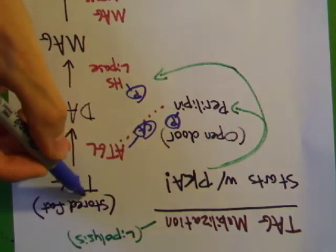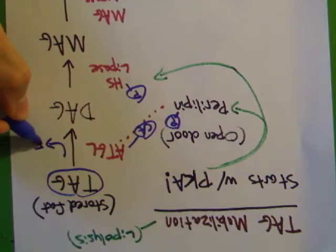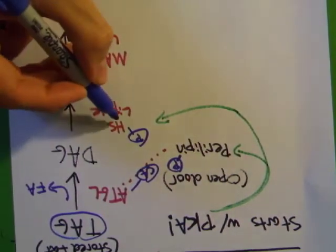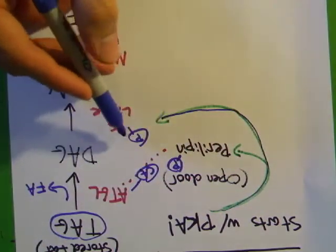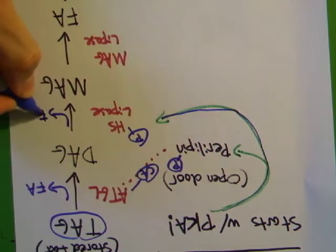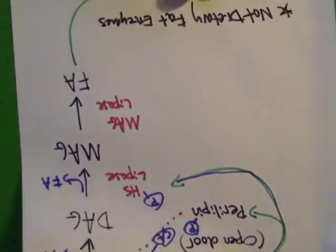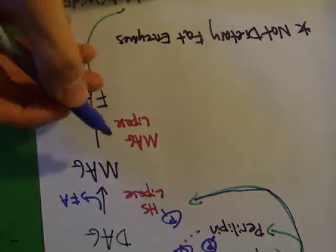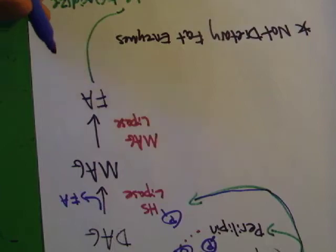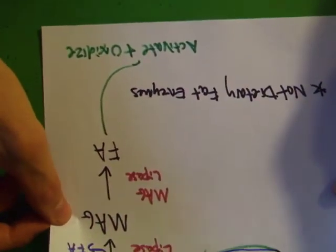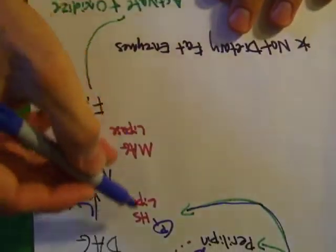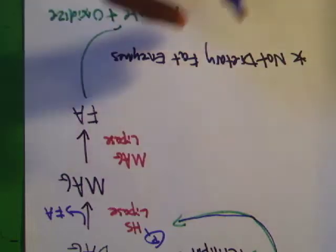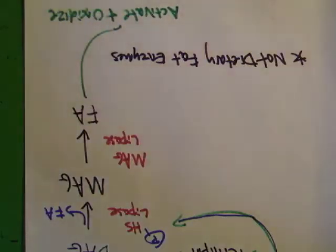ATGL takes your stored triacylglyceride and removes one fatty acid — now it's a diacylglyceride. The next enzyme is hormone-sensitive lipase. It's hormone-sensitive because PKA also phosphorylates it to activate it, releasing another fatty acid. The monoacylglyceride is then converted into a free fatty acid by MAG lipase, and that fatty acid is activated and oxidized.